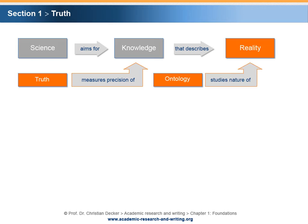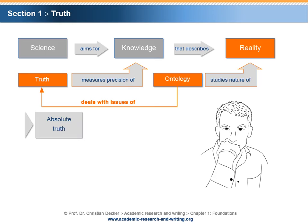Ontology is the branch of philosophy that studies the nature of reality and deals implicitly with issues of truth. The term truth in itself is quite vague. In an ideal or perfect world, scientists would aim for absolute truth. The concept of absolute truth should be viewed as an ideal theoretic concept. Due to that precise character, natural sciences are sometimes viewed as disciplines dealing with matters of absolute truth. However, absolute truth should be understood as being inaccessible by human beings. Even minimal inaccuracies of measurement while conducting experimental or empirical research would fail the objective of absolute truth.